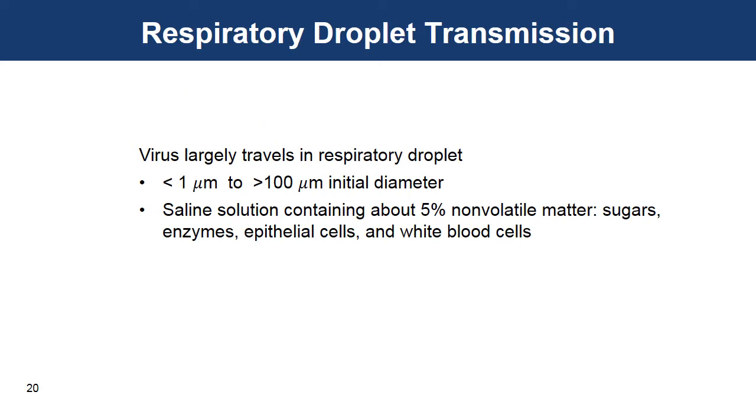Okay, so the respiratory droplet transmission involves droplets that range from less than 1 micron in diameter to 100 microns or larger. They start out as saline solutions containing 5% non-volatile matter enzymes and cells and things.